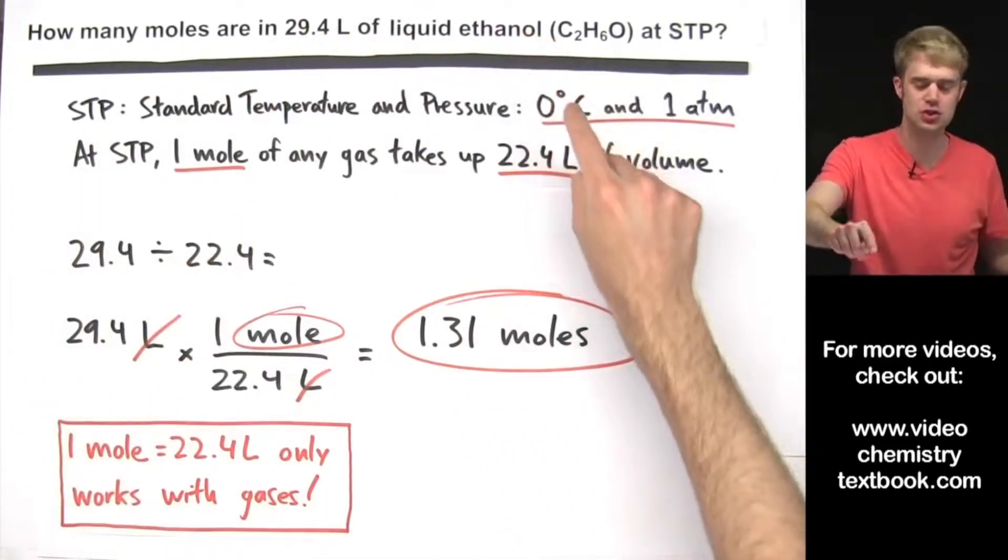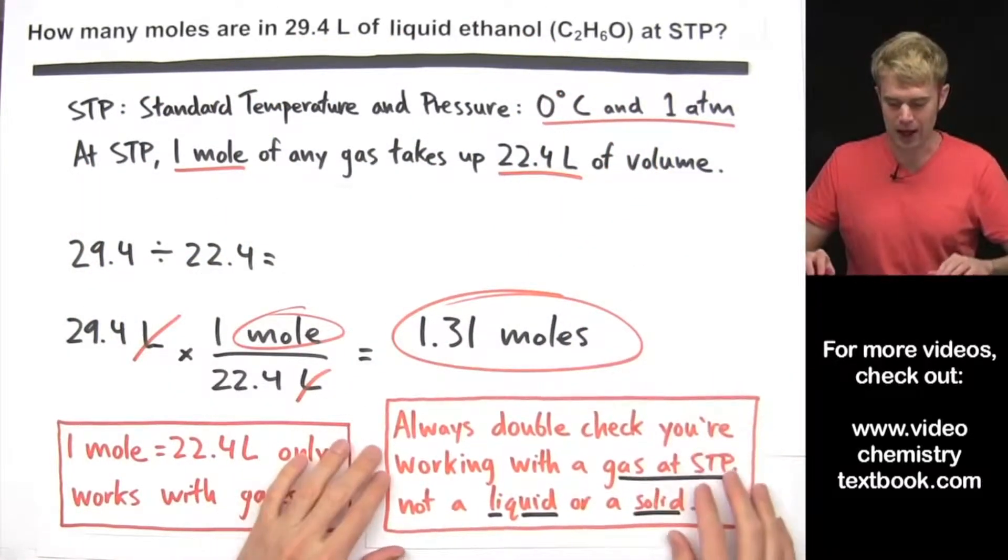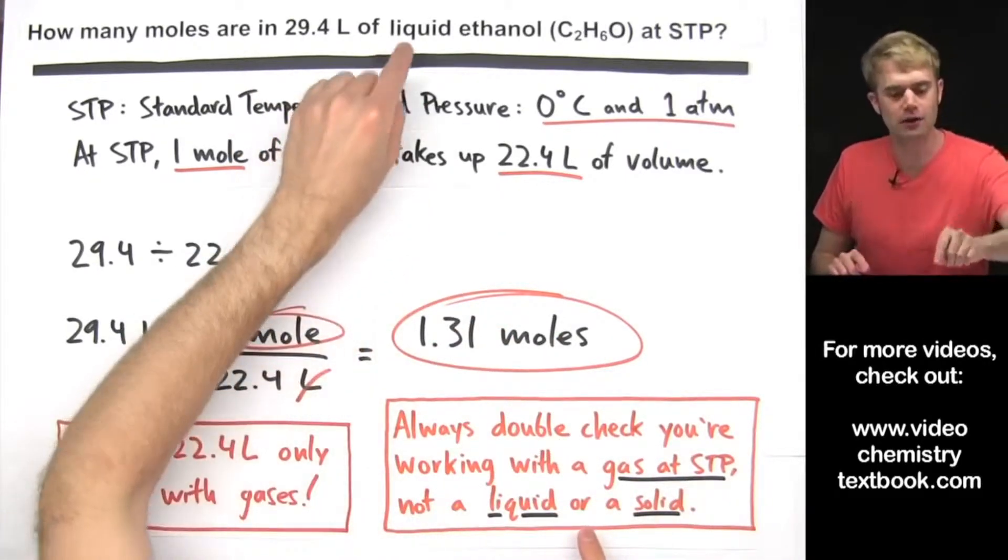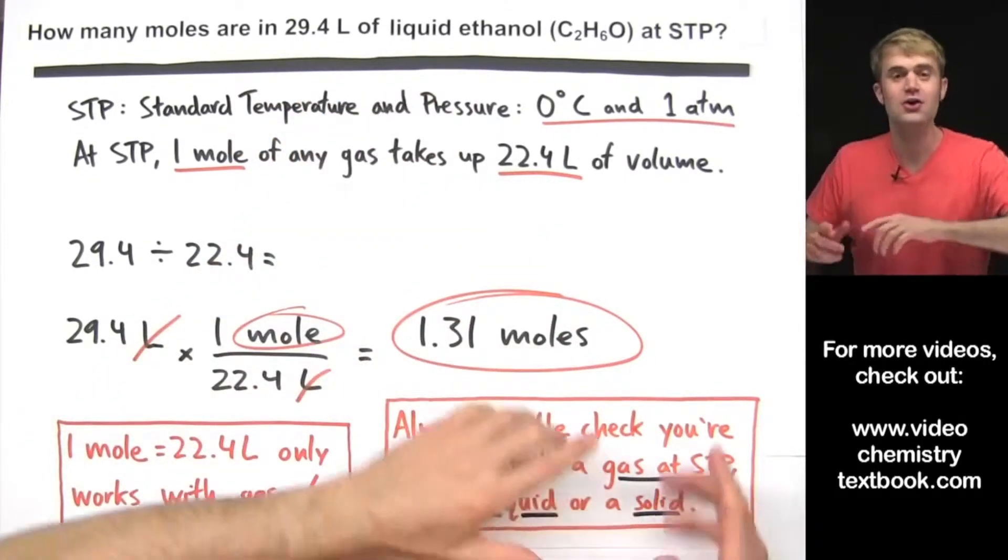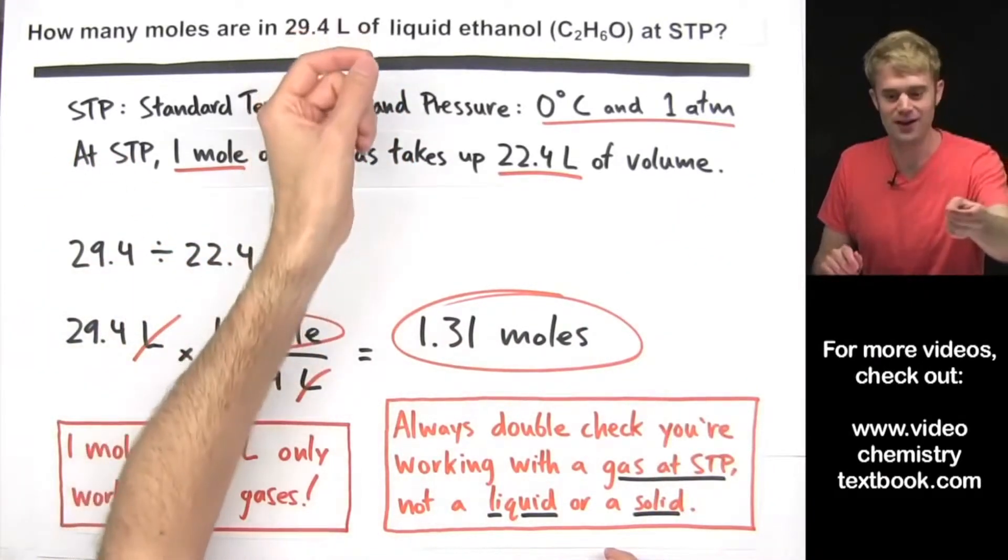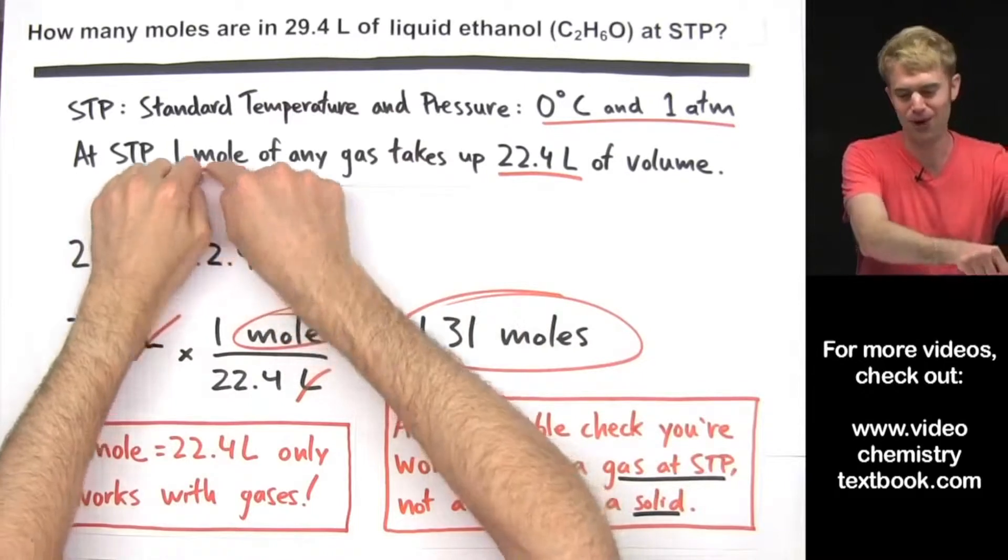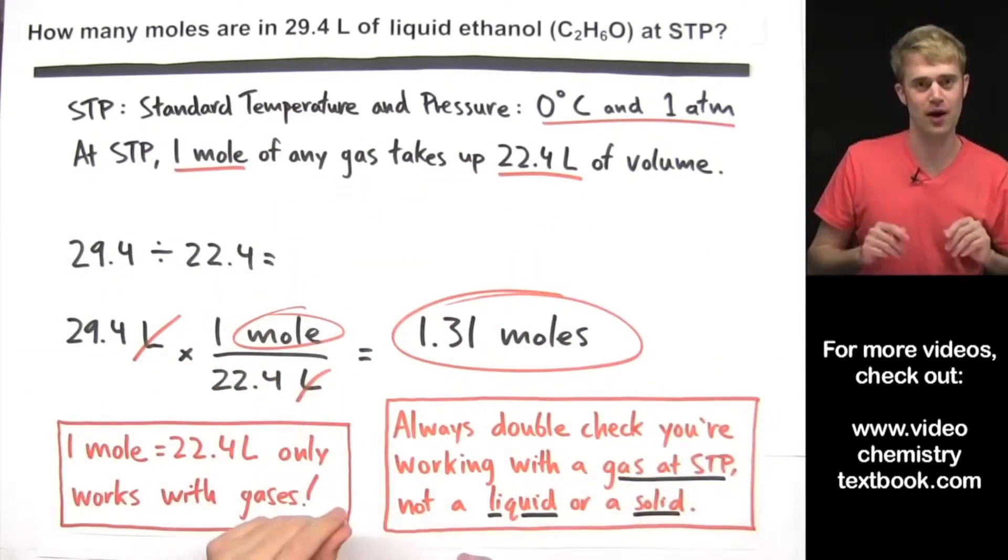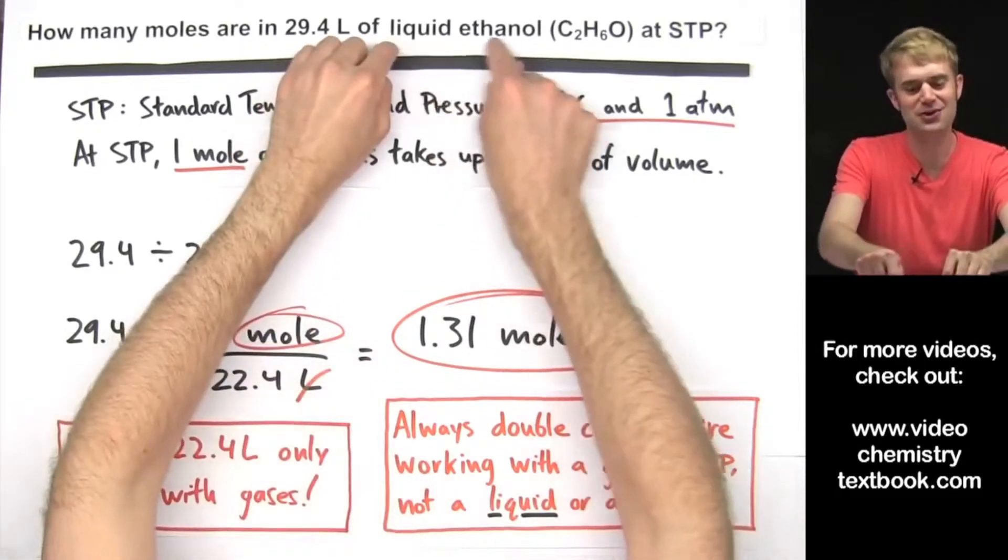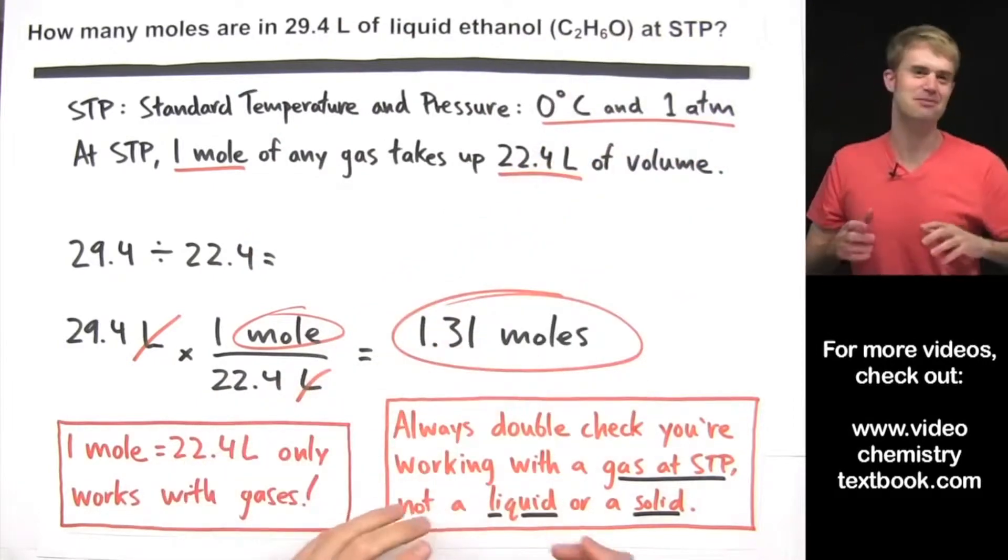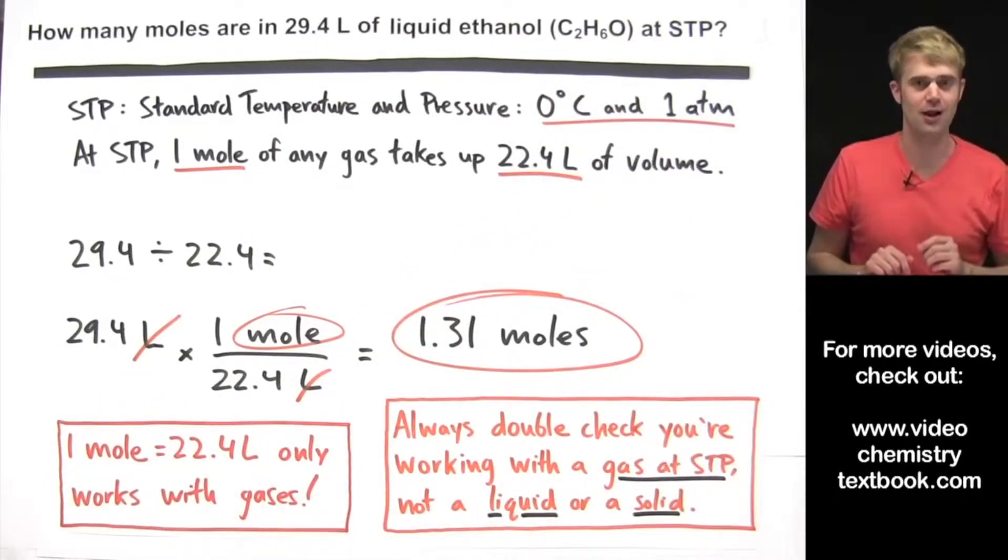So don't get tricked by this. Always double check that you're working with a gas at STP, not a liquid or a solid. So if the problem is asking you about something that's a liquid or a solid, you can't use 1 mole takes up 22.4 liters. You have to solve it in a different way. Don't get tripped up. Make sure that you're talking about gas at STP, not something that's a liquid or a solid.